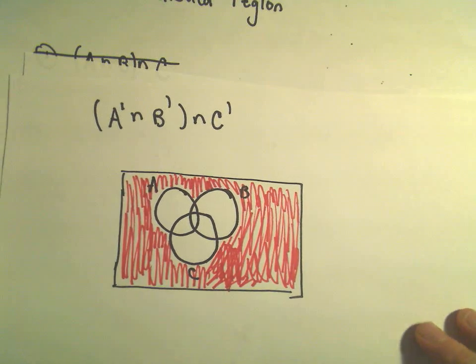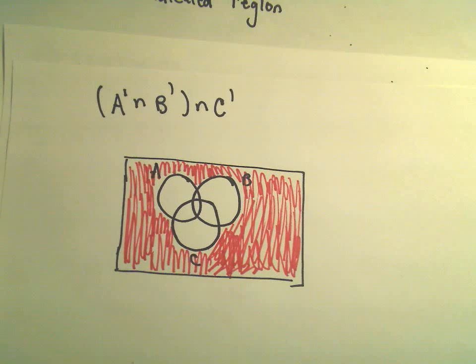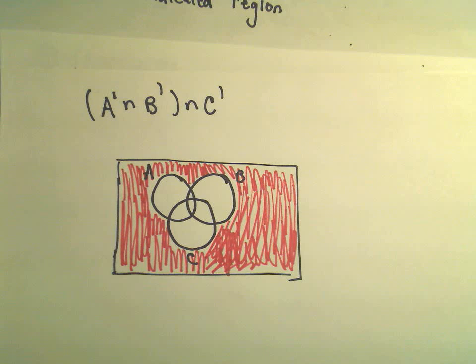But certainly maybe try to shade it and do it in little bits and pieces. If you don't believe my answer here, do a little practice and see if you can't come up with it. And again, these same ideas work if you have four sets or five sets or six sets. But typically in most classes where you see Venn diagrams, they'll typically only make you do either two or three sets. So, all right, I hope this video makes some sense and helps you out out there.